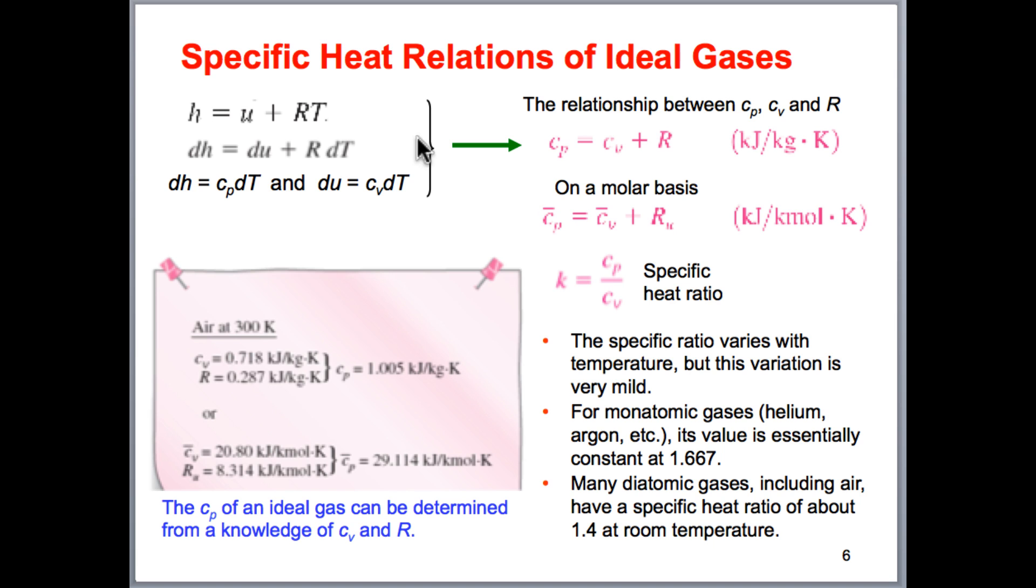Now, for an ideal gas, we can show that, remember, using the ideal gas law, H is equal to U plus PV. We can replace that with the ideal gas relationship, PV is equal to MRT, or per unit mass is RT, and we can solve this equation to obtain and manipulate this to obtain Cp is equal to Cv plus R. So this relationship may come in useful for some of the calculations we do later on.